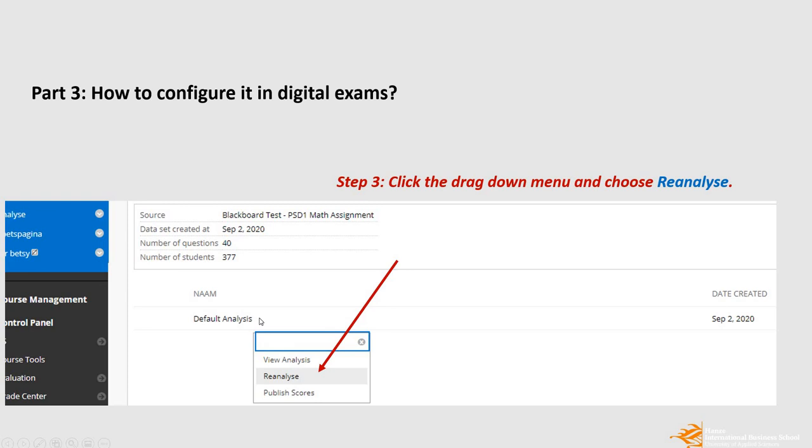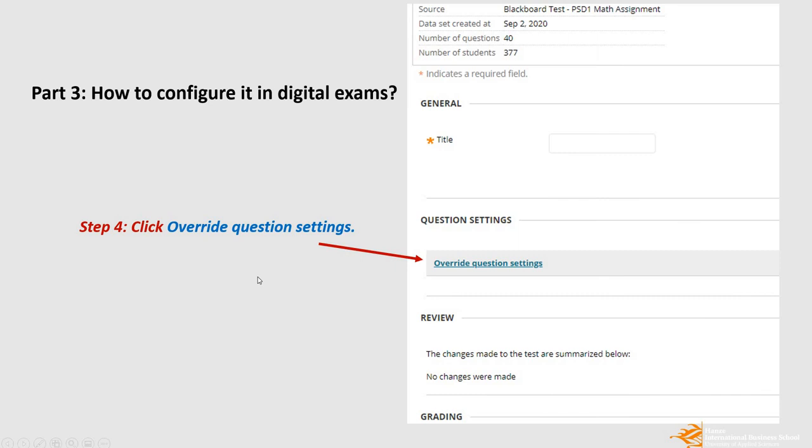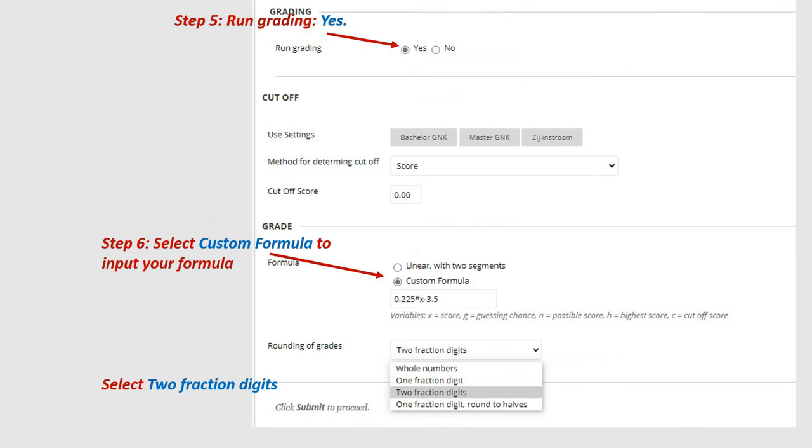So you can click the drop down menu. It's a small triangle here. And then you have a drop down menu. You select the second one, Re-analyze. When you start re-analyzing it, you click Override Question Settings. If you click this one, you can see that the question list is expanded. And then you select the wrong grading. Yes. By default, it is no. So you need to manually select yes.